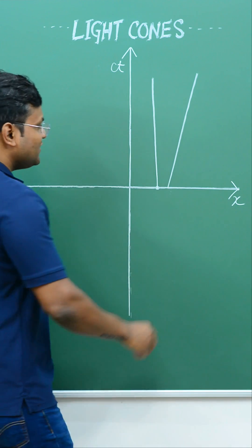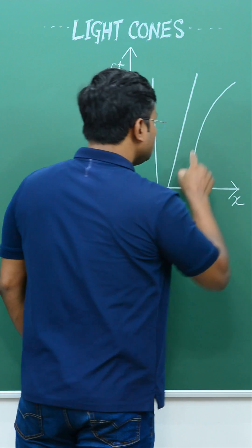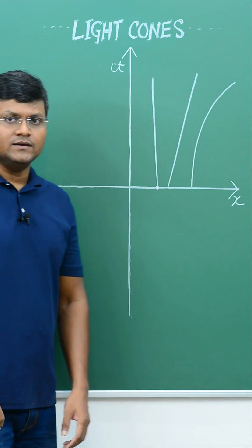An object accelerating along a straight line will have a curved line where the change in slope at each point represents the change in velocity of the particle.